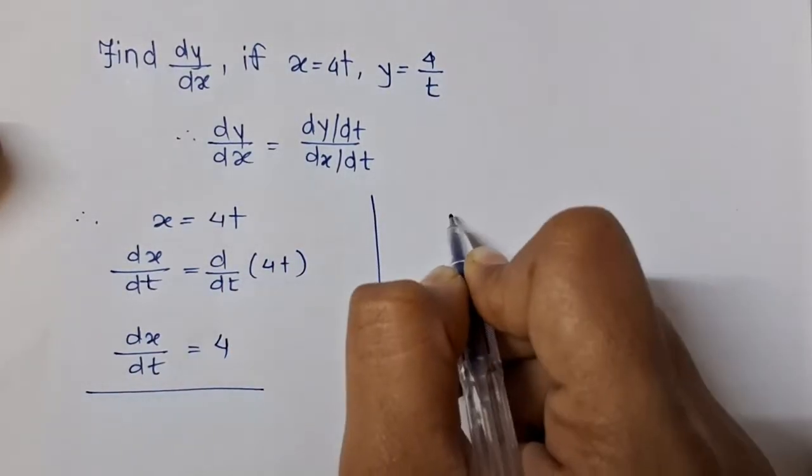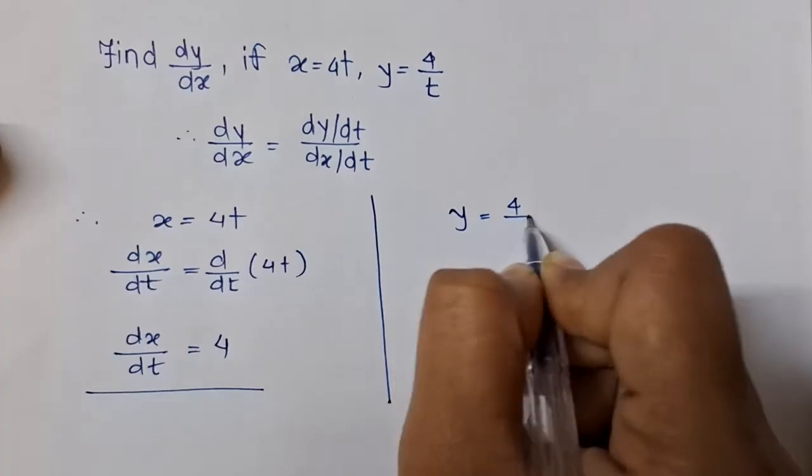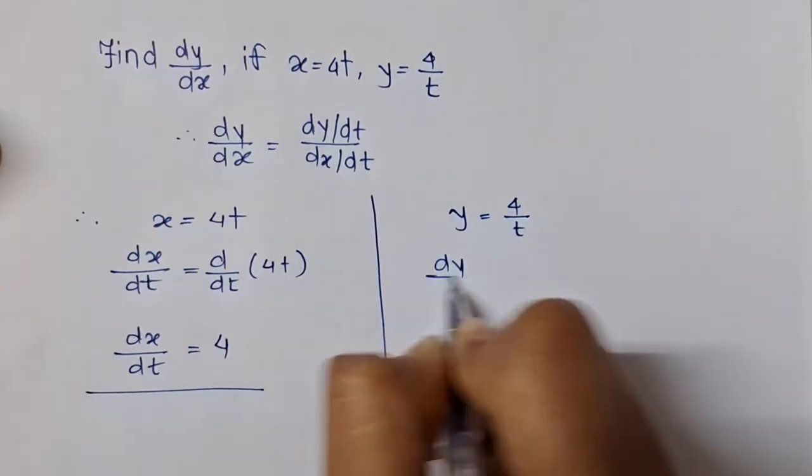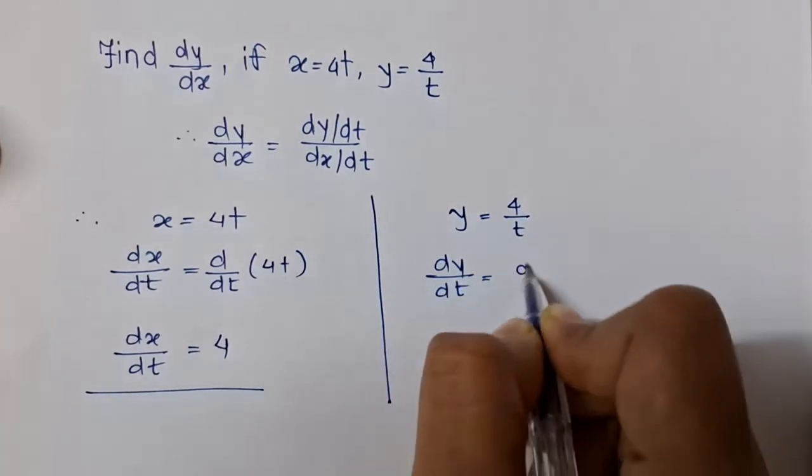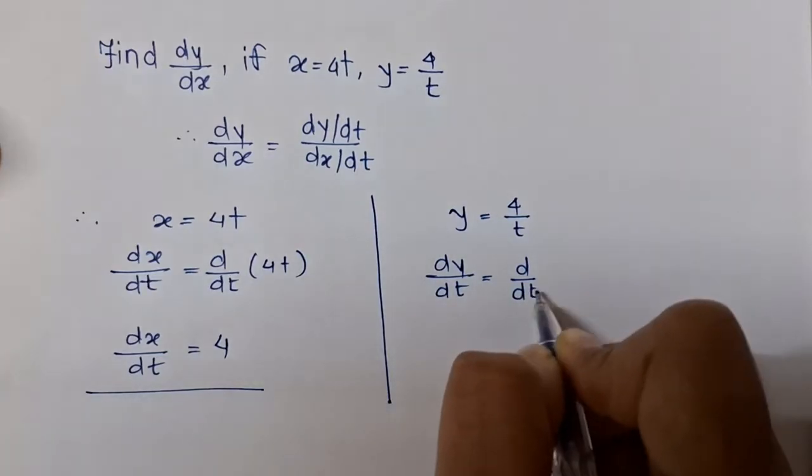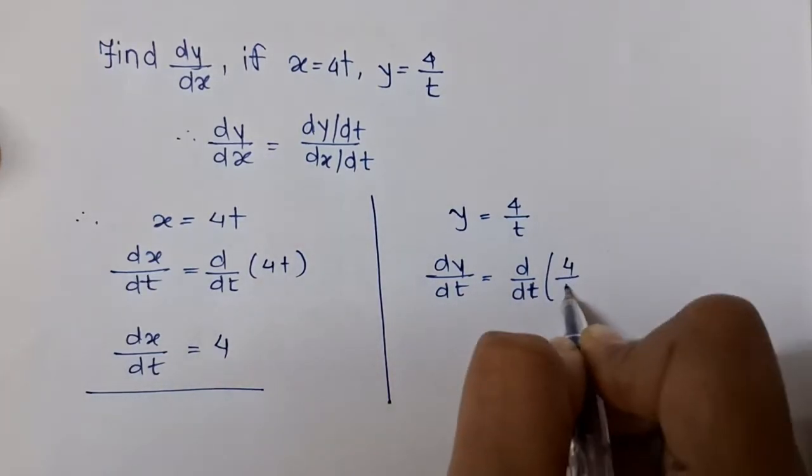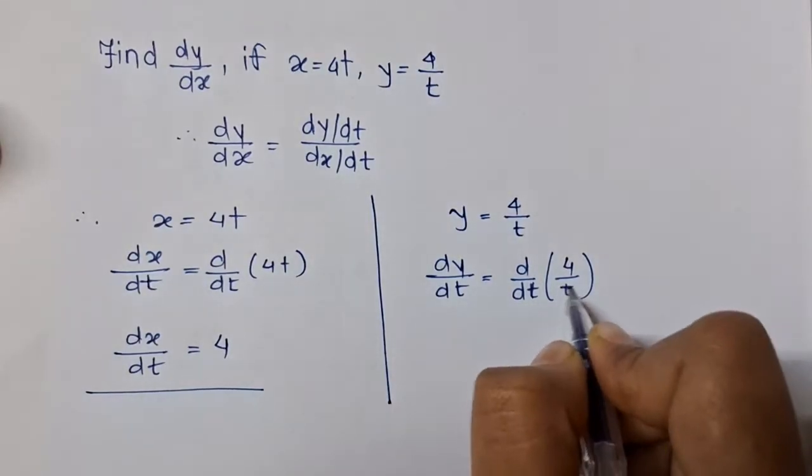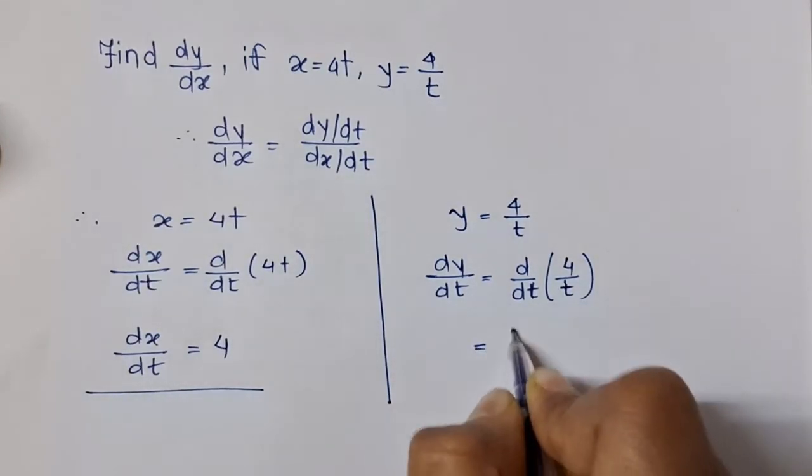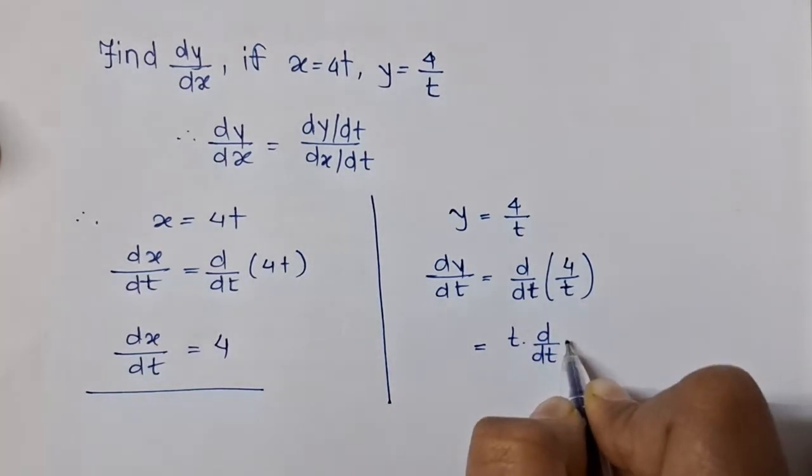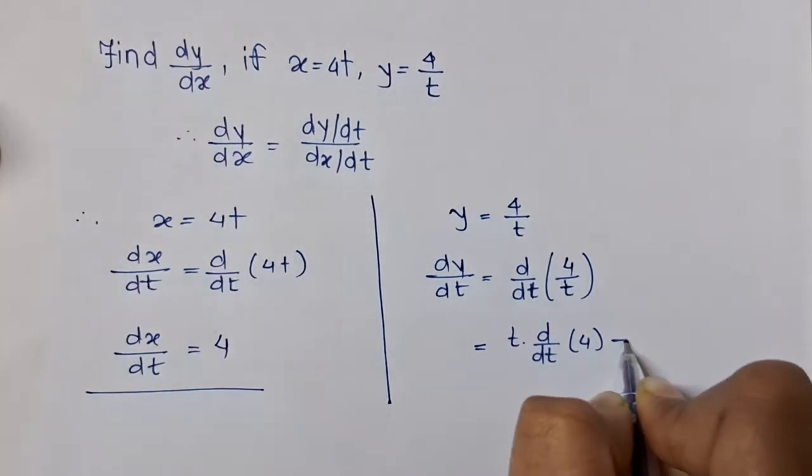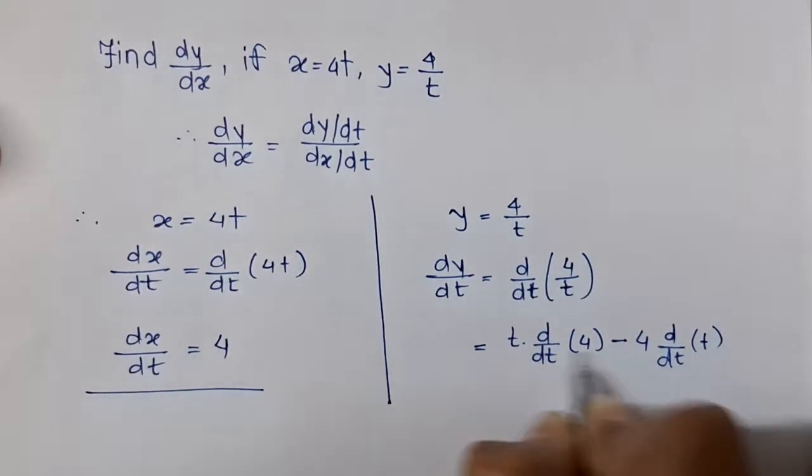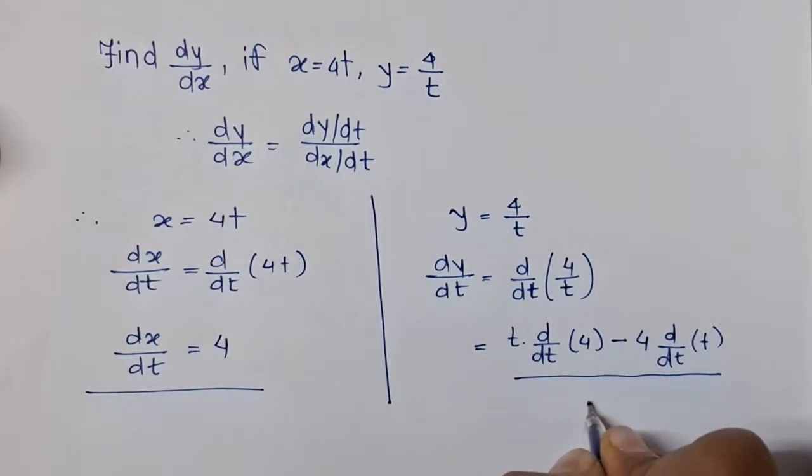Now let's find y = 4/t. So dy/dt = d/dt(4/t). As this is in division, we have to apply the quotient rule and we will get [t * d/dt(4) - 4 * d/dt(t)] / t².